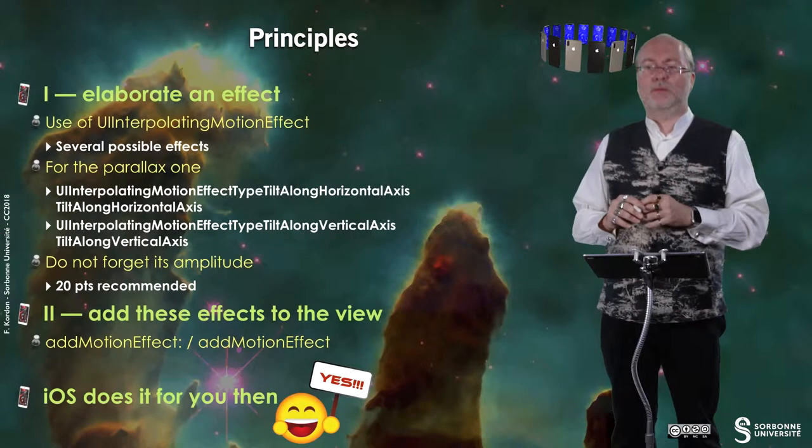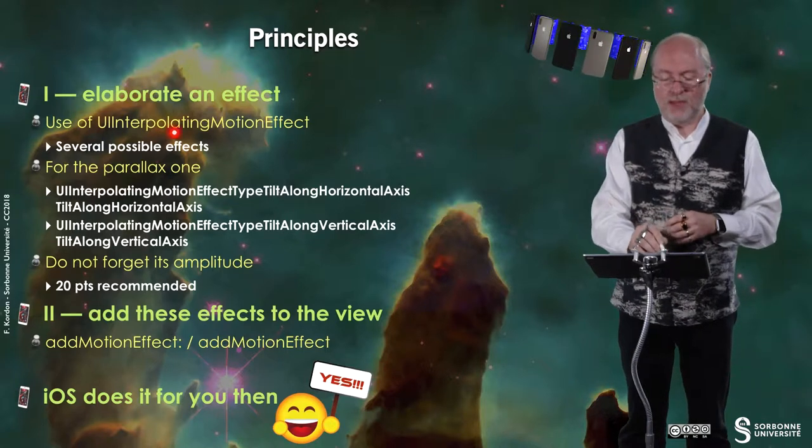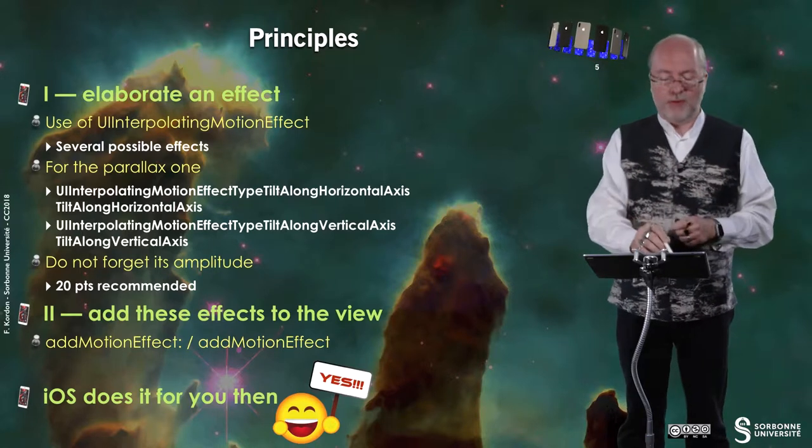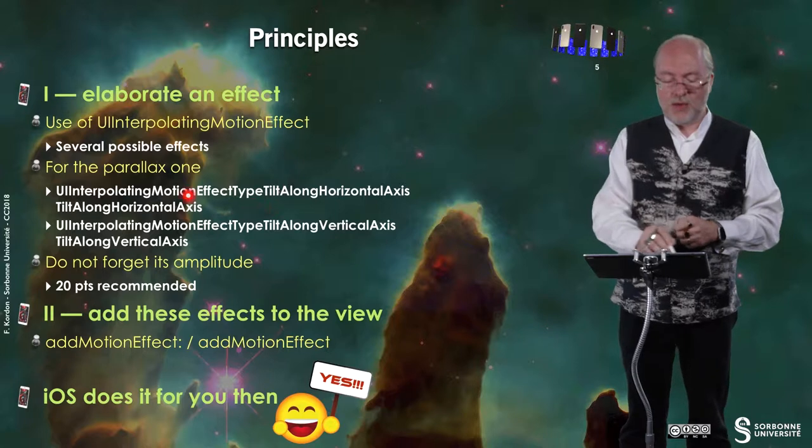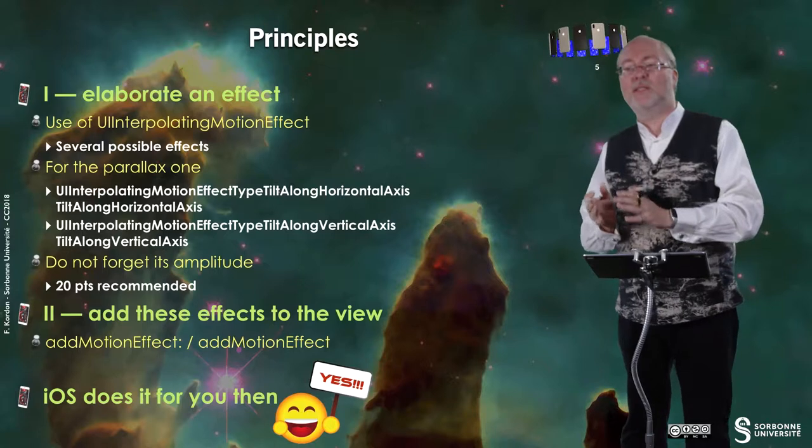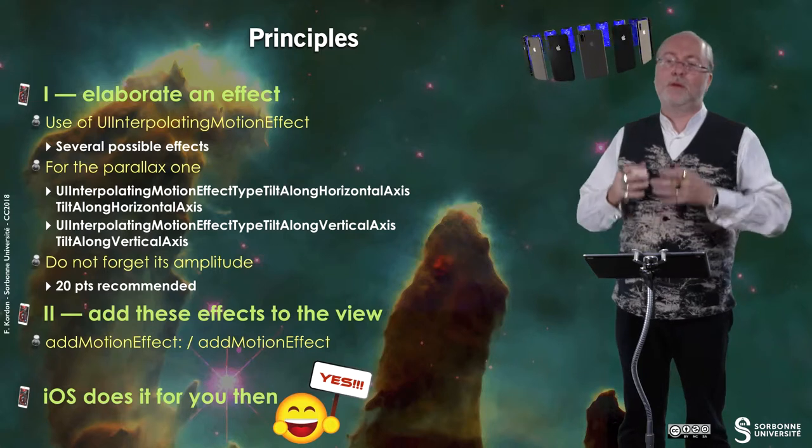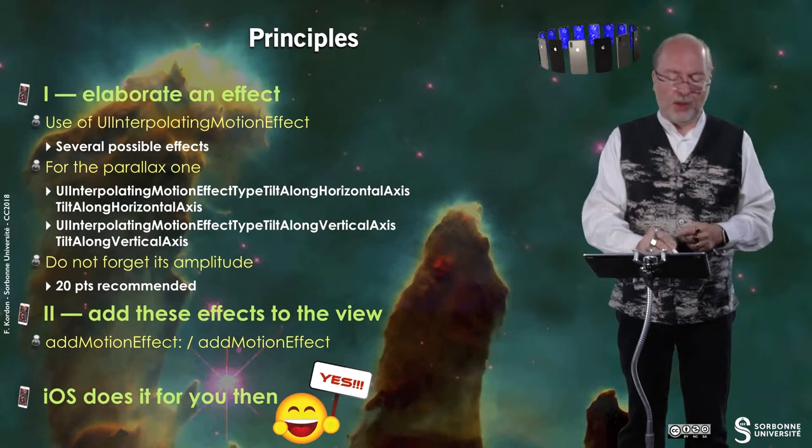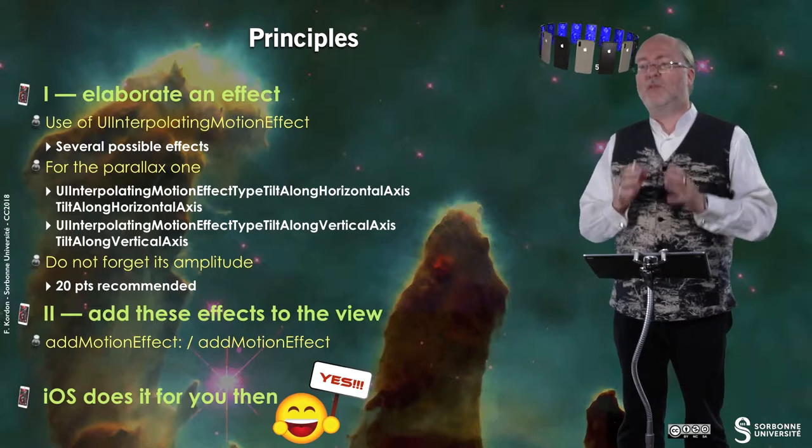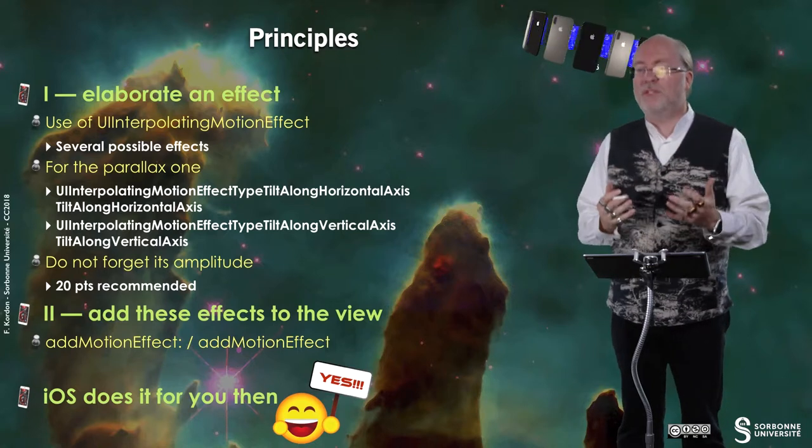Let's have a look at the principle. First, you elaborate an effect. An effect is a UIInterpolatingMotionEffect. And you have several possible effects. For the parallax one, these are the ones you can program. You have a tilt on the horizontal axis and a tilt on the vertical axis. And in fact, you have to set up an amplitude. Apple recommends 20 points. In fact, on my short demo, I set it to 50 to have more amplitude and then to make it more visible.